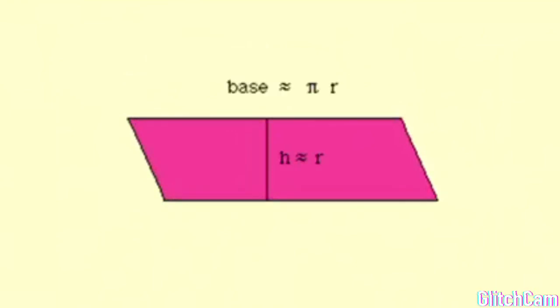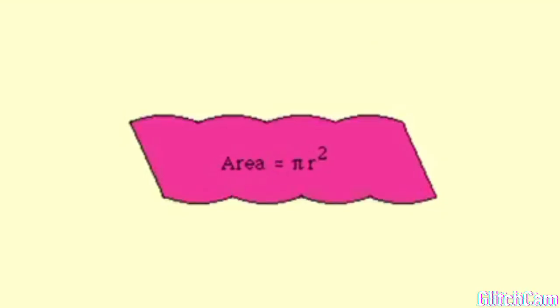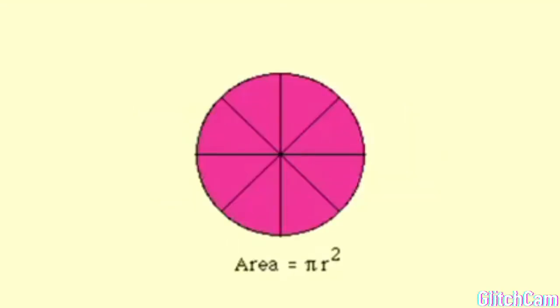And the approximating parallelograms approach the area of the circle more closely. This gives a geometric justification that the formula of the circle is pi r squared.